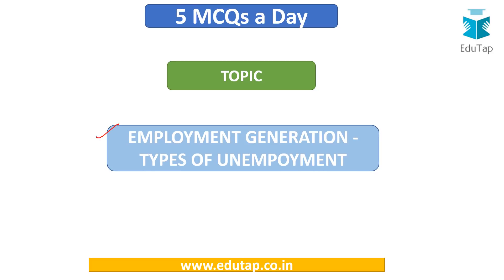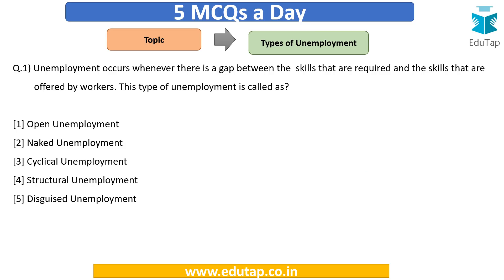We are going to solve MCQs. First of all, try and solve the questions and do not forget to mark your score and mention it in the comment section below, so you can see whether you are improving or not. First question: unemployment occurs whenever there is a gap between the skills that are required and the skills that are offered by workers. This type of unemployment is called as — the feature of a kind of unemployment is given and you have to find out the type.